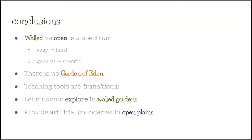So the conclusion is that walled versus open is a spectrum — easy, hard, general, specific — but there's no Garden of Eden because it depends on what level your students are at.